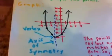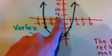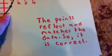Next, you graph the points, which I did, and the vertex is negative 1, negative 20, and the axis of symmetry is this line through negative 1, which all the points should reflect, and they do, and they match the data, so this is correct.